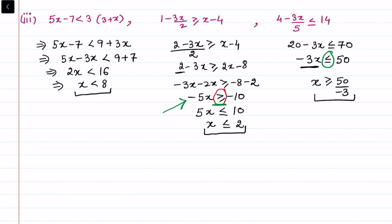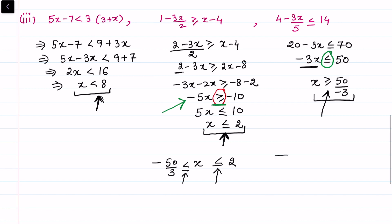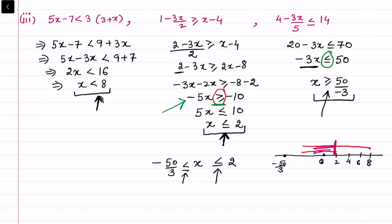Now combining all three: x less than 8 and x less than or equal to 2 together give x less than or equal to 2. The lower bound is x greater than or equal to minus 50 by 3. Drawing on the number line with 0, 2, 4, 6, 8 marked: x less than or equal to 2 is more restrictive than x less than 8. So the common solution range is minus 50 by 3 less than or equal to x less than or equal to 2.